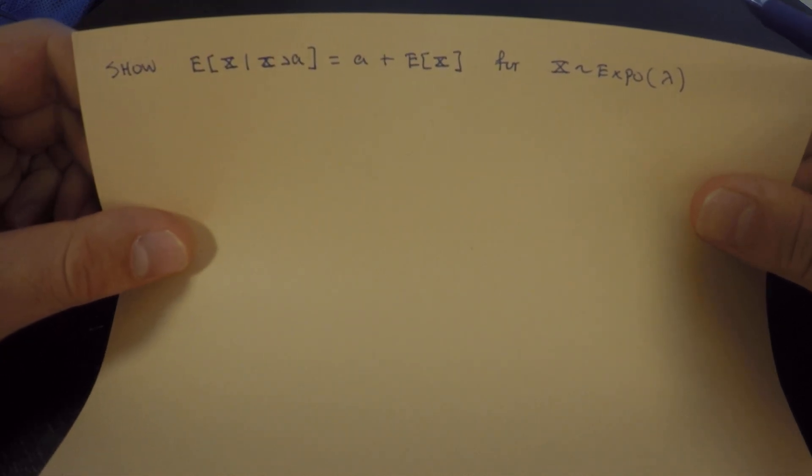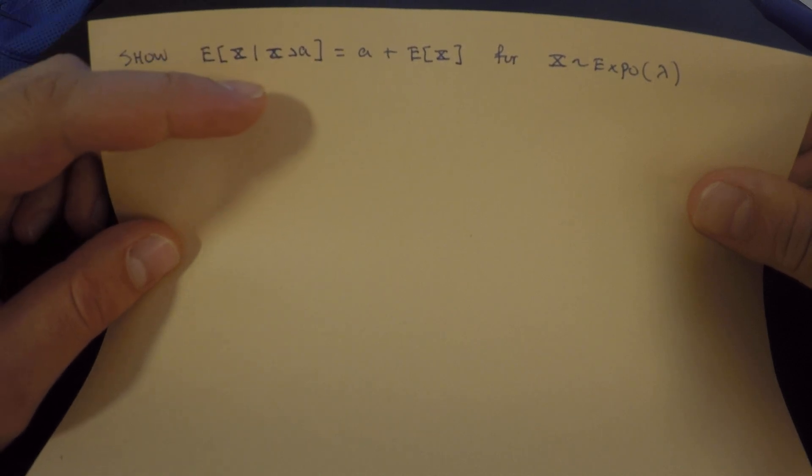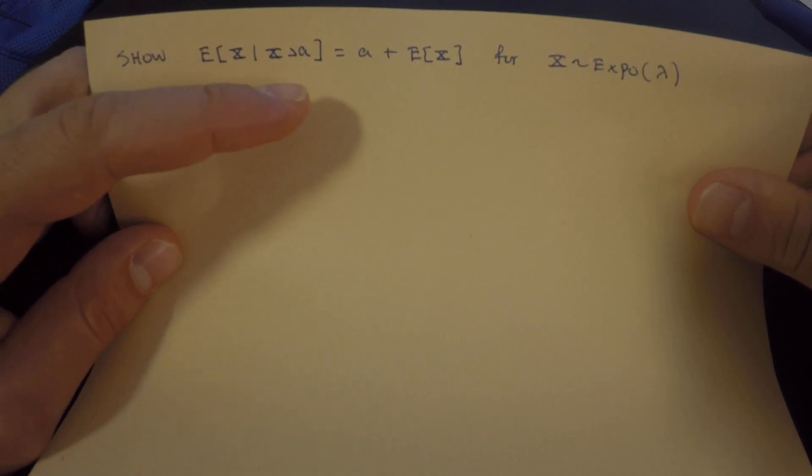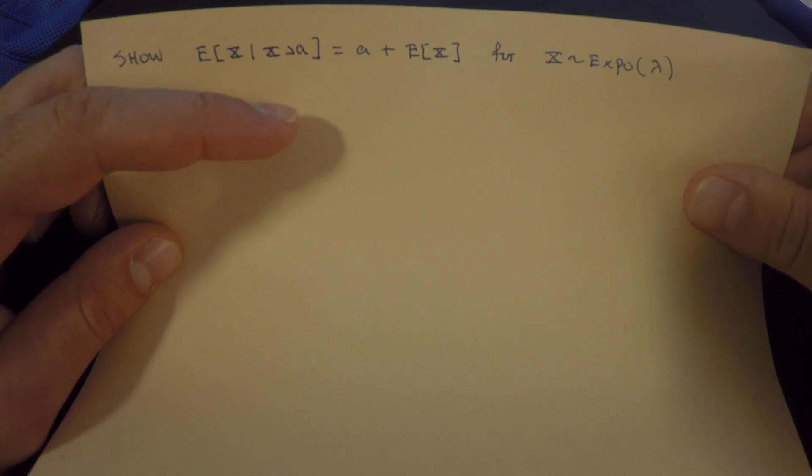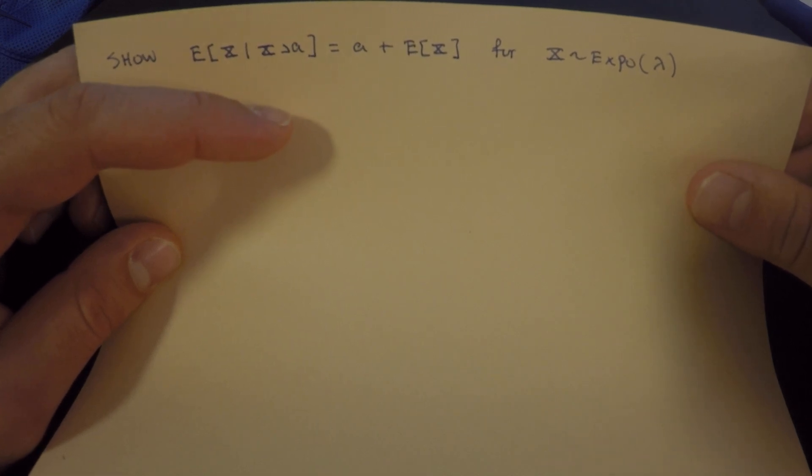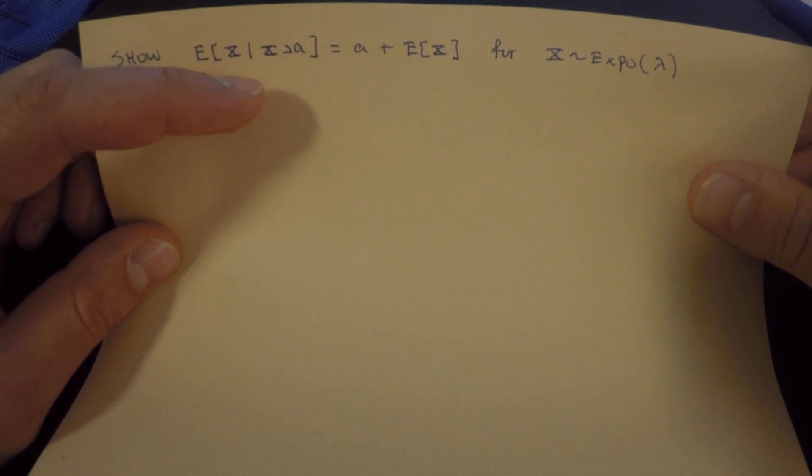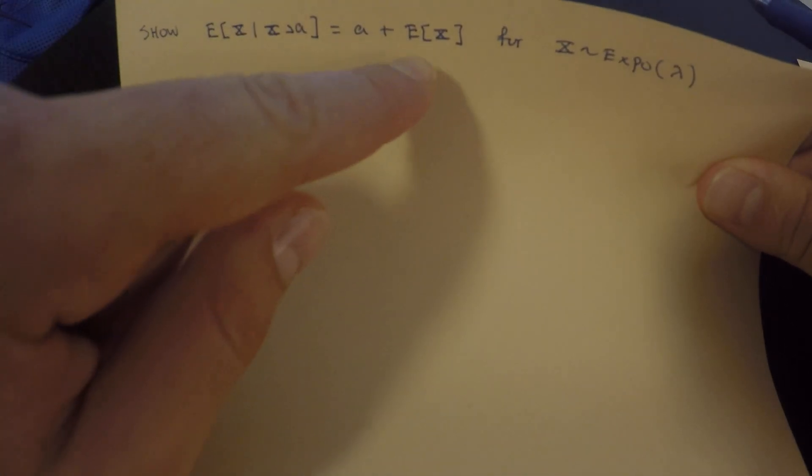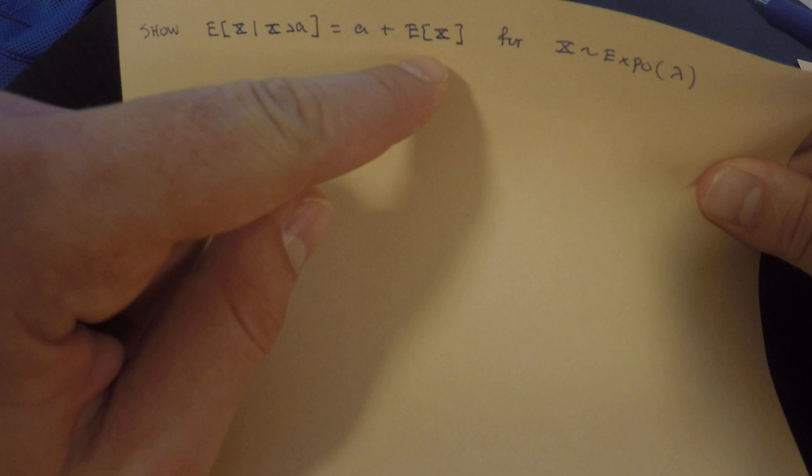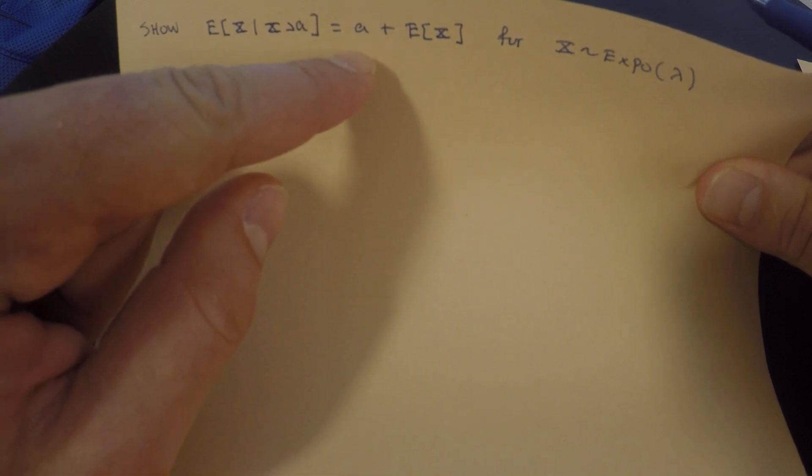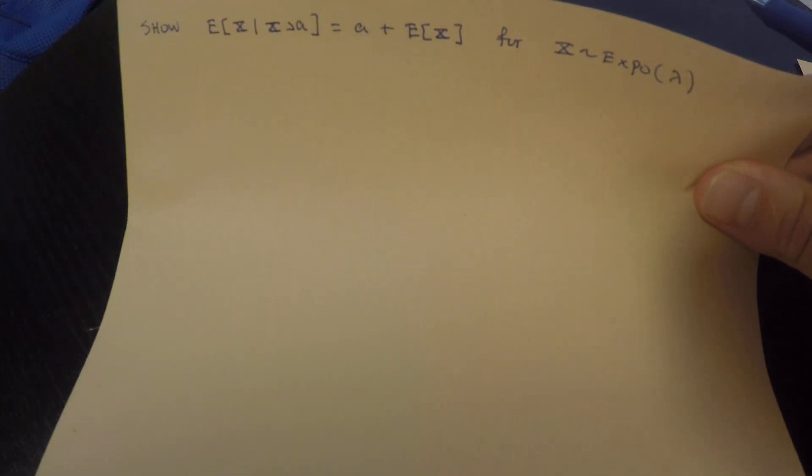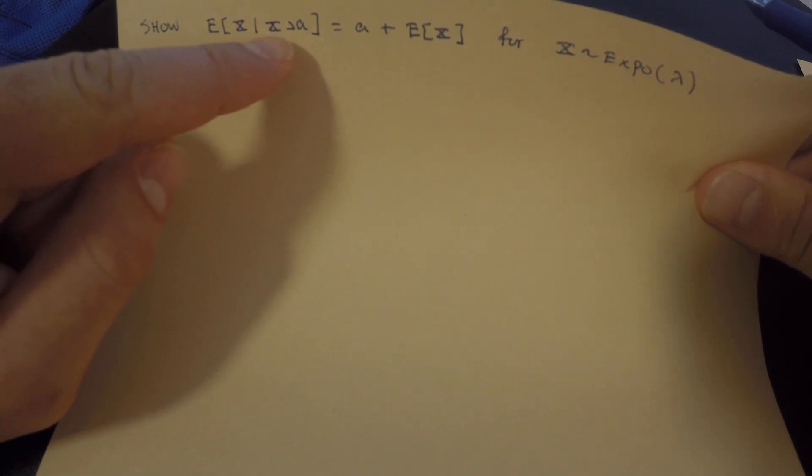So I want to show this statement right here. This statement that the conditional expected value, the conditional expectation of x, given that x is greater than a, is equal to a plus the expected value of x. This is for x an exponential random variable, and this is related to the memoryless property. This is just saying, what's the average, assuming that a random variable is greater than a value? Well, it's going to be the exact same average as before, 1 over lambda, plus however much you already went above that value.